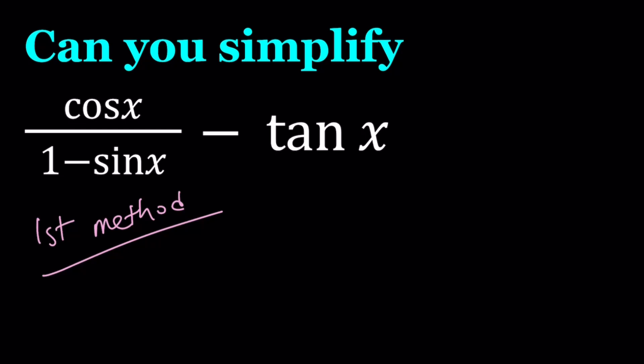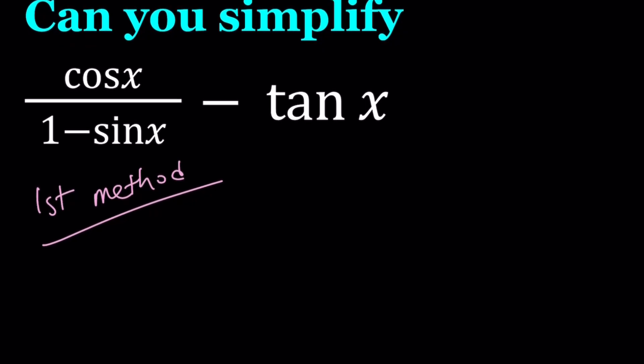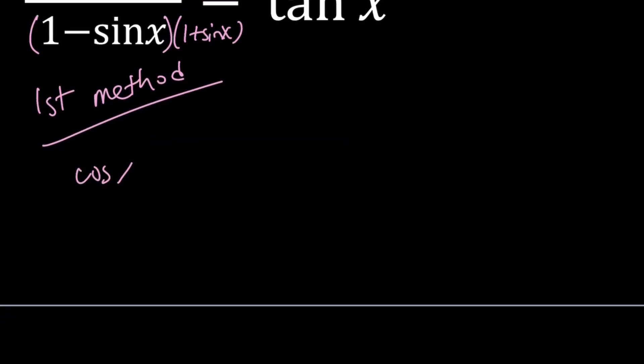Anyways, the first method is going to use the idea of conjugates. So I'm going to multiply the top and the bottom by 1 plus sine x. Let's go ahead and do it. Cosine x multiplied by 1 plus sine x.